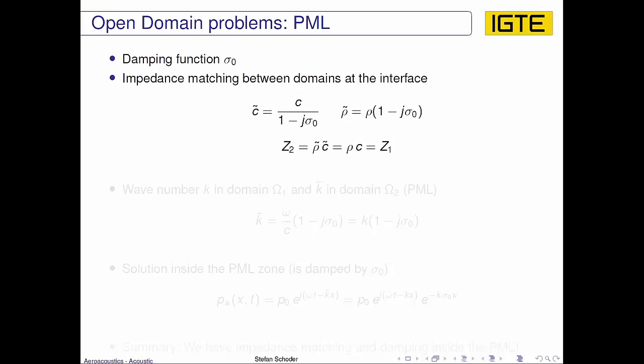We would like to have in Ω2 a deviation to the speed of sound in the characteristic by this damping function, and this will be compensated in the acoustic or in the density variations. And so the density, which also defines the impedance, is also modified. And since both are equally modified, the terms cancel out and we will receive the original impedance Z1 at the interface Γd. And now we have impedance matching at the interface and damping in the second region.